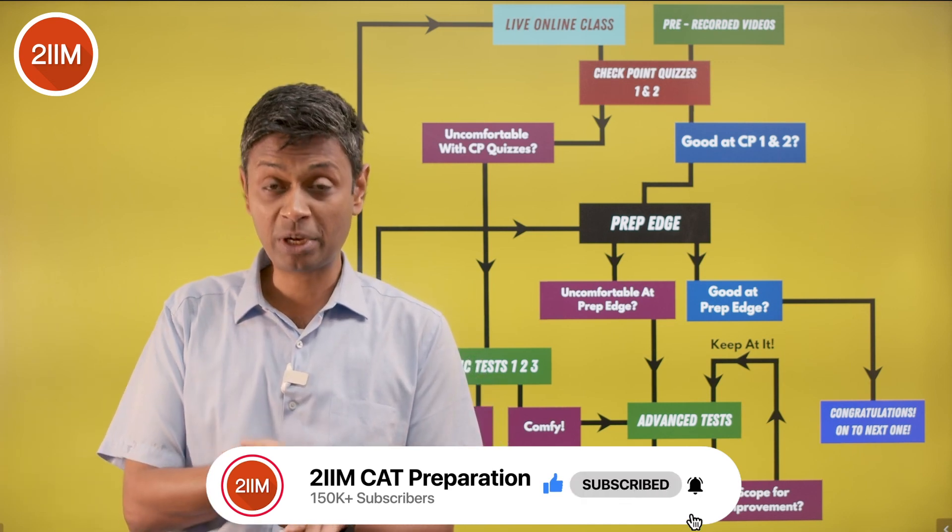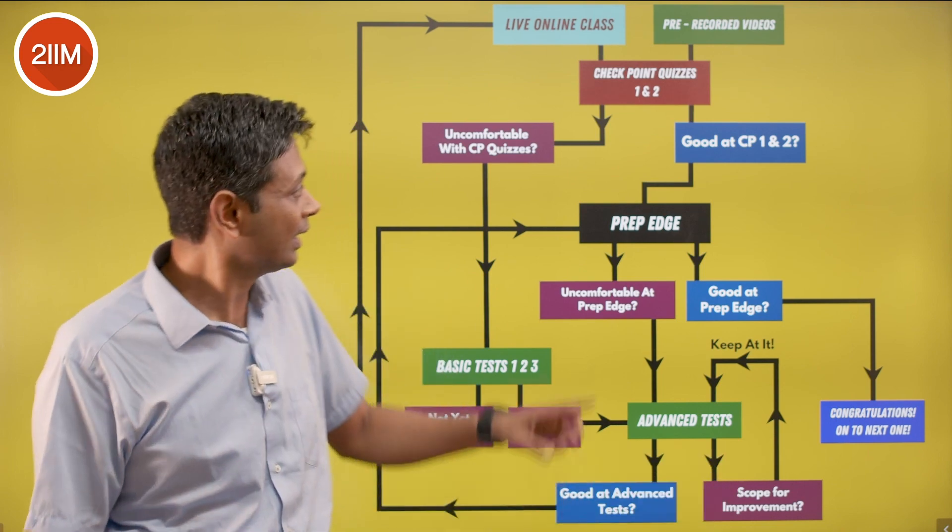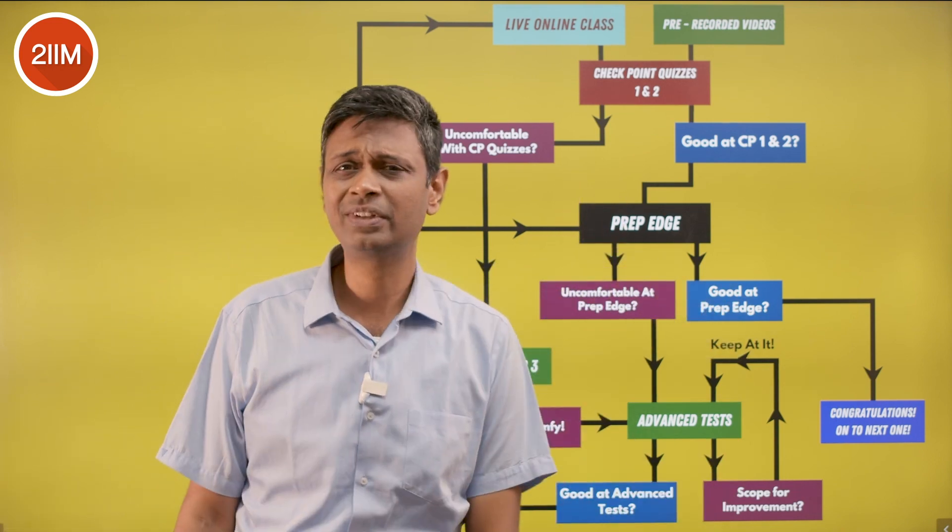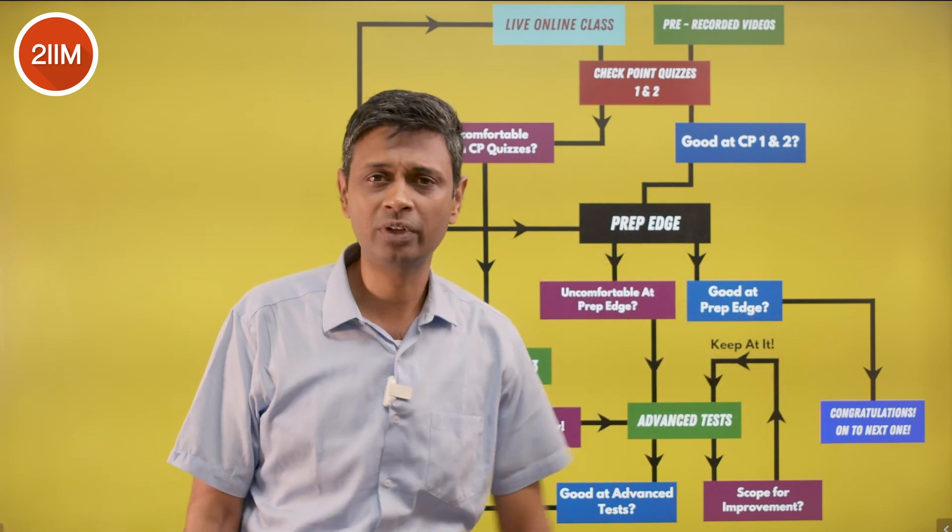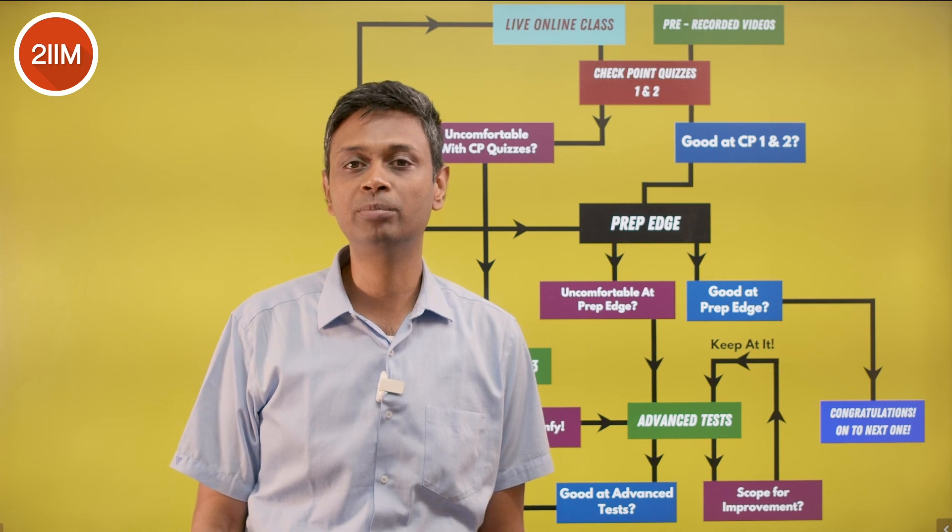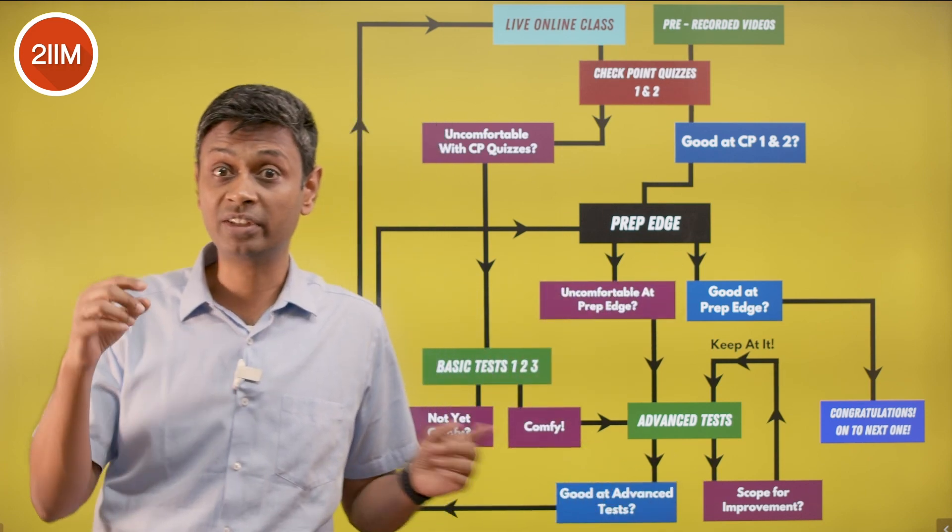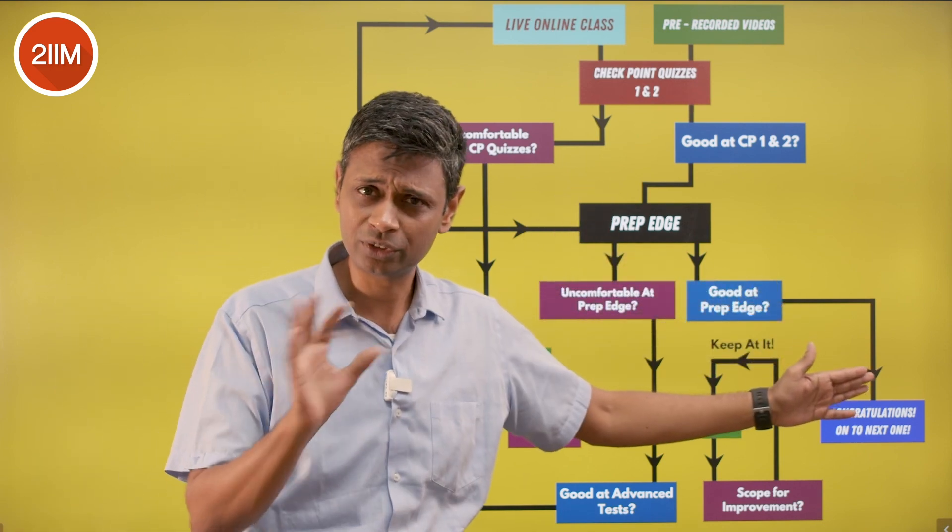Prep edge is the benchmarking thing: I'm comfortable, I got this, I got the basics. Then go to prep edge. If there are seven questions and you've got six of them right - you got this, go on, go to the next topic. You've done progressions, go to percentages, go to simple interest, compound interest, go to mixtures. You'll have to revisit to revise and get practice and build speed and all of that, but you've done this topic.